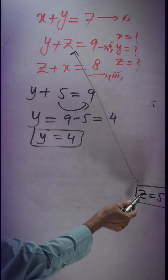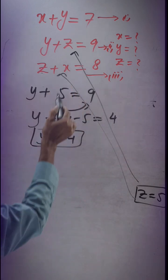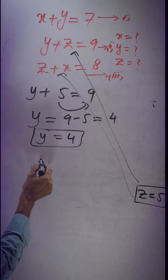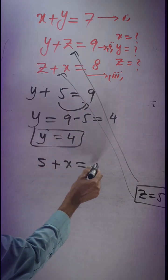Similarly, if we need the value of x - z is already done. We put this result in the third equation. In place of z, we put 5 plus x equals...